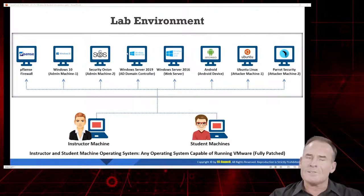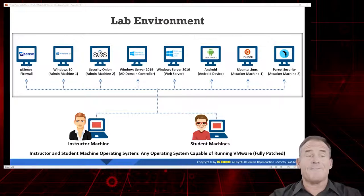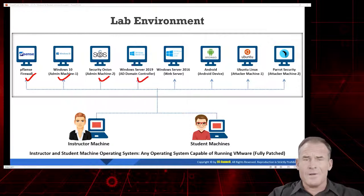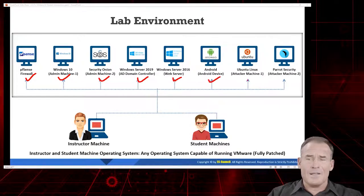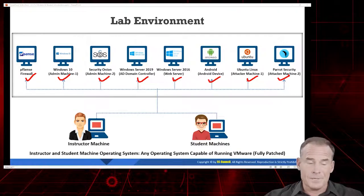About an 8 to 4 schedule — your timings may vary depending on lab exercises or if you're redoing anything — but this would typically fit into a five-day window. Your lab environment is very robust; this is actually one of the more complete lab environments in the catalog. You have a PFSense firewall, a Windows 10 admin machine, a Security Onion admin machine, a Windows Server 2019 machine, a 2016 web server, an Android, Ubuntu Linux, and a Parrot Security machine, which you'll use as your second attacker machine. Lots of great lab exercises — about 25 hours of labs. Really, really great stuff.